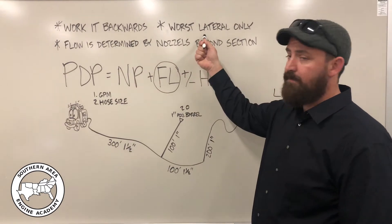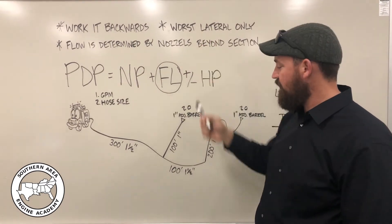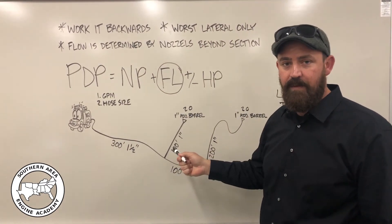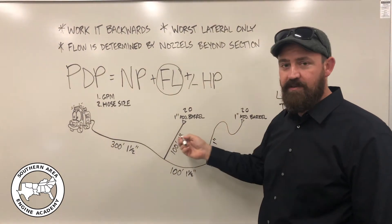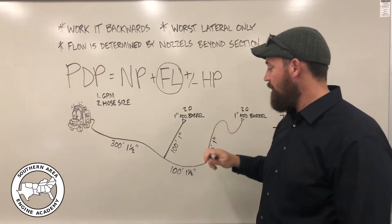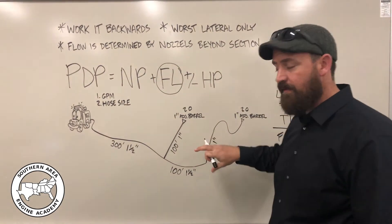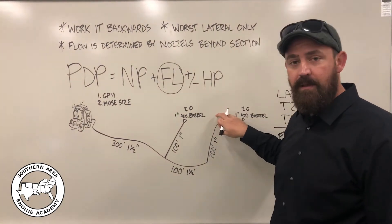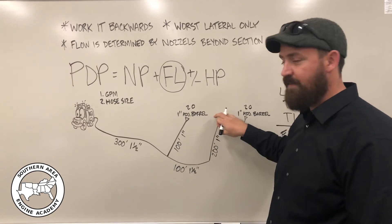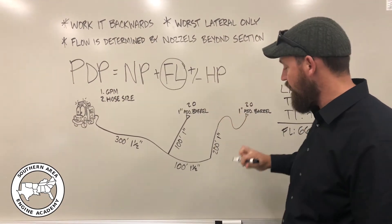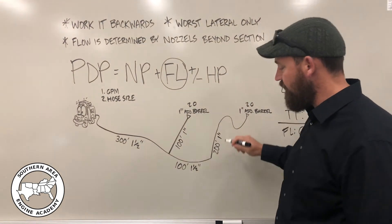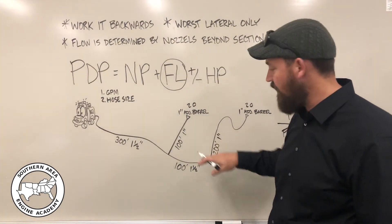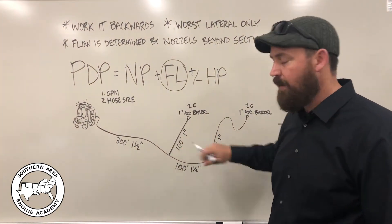Well, that takes us to our next rule of thumb, which is that we're only going to do the friction loss for the worst case lateral. The worst case lateral will be the one that requires the most pressure to operate. In this instance, both of these laterals have the same nozzle on them, which are going to run at the same pressure and they have the same flow. So the longer lateral is going to be the worst case. This one is 200 feet long, so it has more friction loss than the shorter lateral.